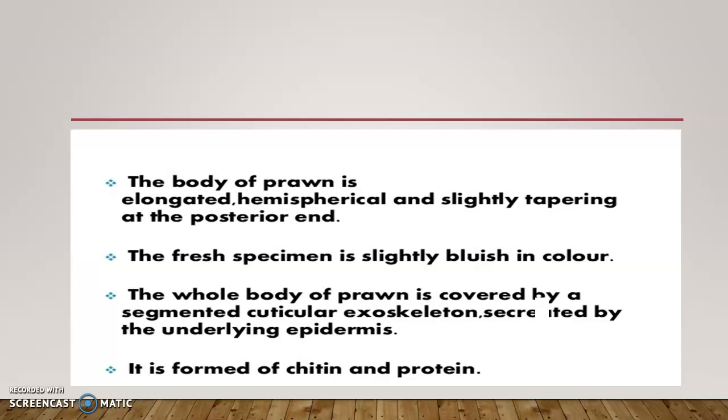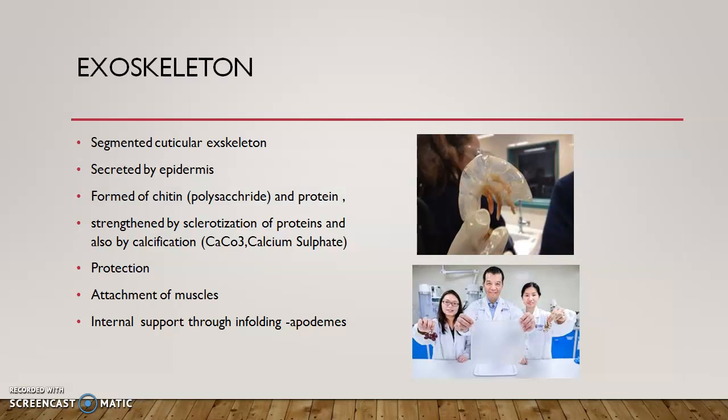The exoskeleton is also strengthened by calcification, formed by the deposition of calcium carbonate and calcium sulfate. The exoskeleton is a segmented cuticular exoskeleton secreted by the epidermis. It is formed by chitin — the polysaccharide protein — strengthened by proteins and by calcification with calcium carbonate and calcium sulfate. The exoskeleton protects the body, provides attachment for muscles, and gives internal support through in-foldings called apodemata.